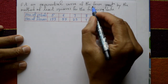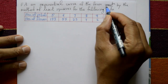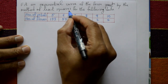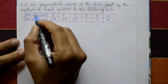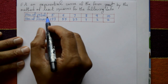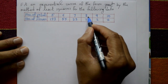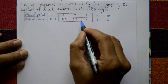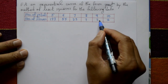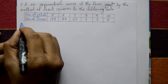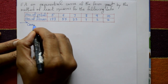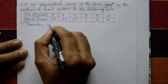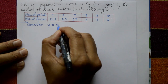Fit an exponential curve of the form y = a·e^(bx) by the method of least squares for the following data. Number of petals: 5, 6, 7, 8, 9, 10 and number of flowers: 133, 55, 23, 7, 2, 2. Consider the exponential curve y = a·e^(bx).